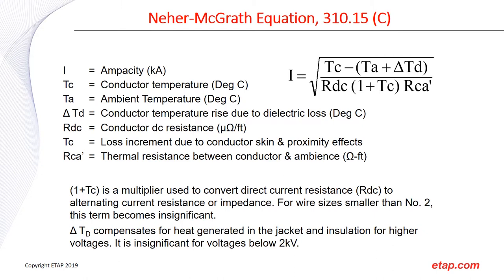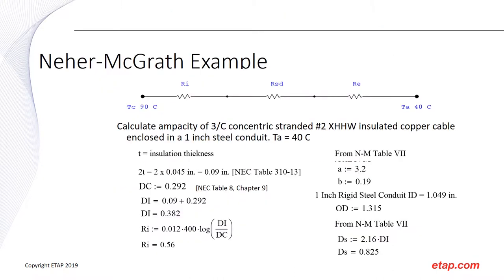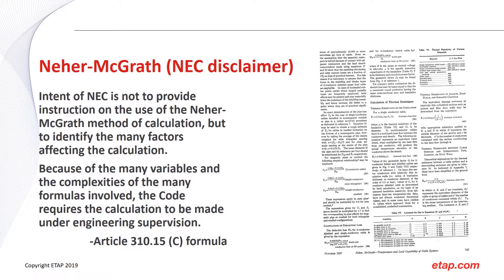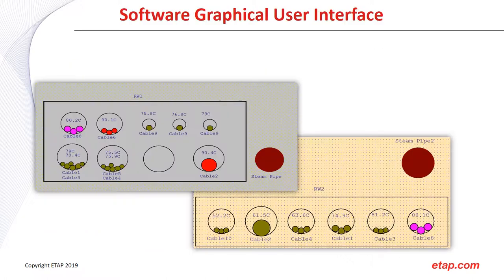For example, to calculate the ampacity of a three-conductor concentric XHHW-insulated copper cable enclosed in a one-inch steel conduit with an ambient temperature of 44°C, you would have to consider many different constants — referring to the Neher-McGrath paper for insulation thickness and several tables. It's a very time-consuming and labor-intensive process. Typically, engineers perform these calculations using a software graphical tool like ETAP.